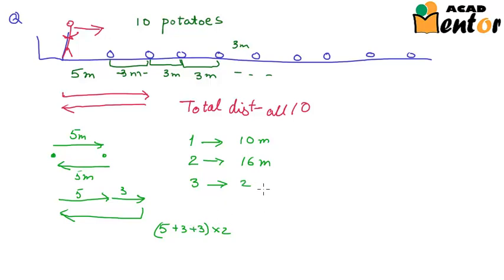In order to get the fourth potato, he travels 11 plus 3, that is 14 into 2, 28 meters. Do we see a pattern here? Yes. Now if you assume this as the first term, then the next term is at a distance of 6 meters. And so is the third term. And same between 3 and 4. Hence, we can say that the distance that a person travels to pick up the potatoes forms an AP, where the first term is 10.